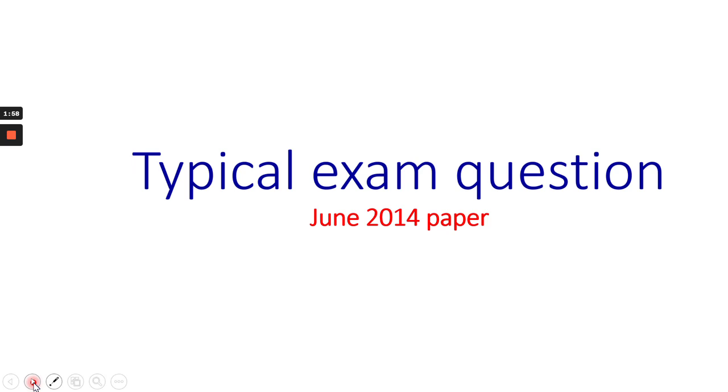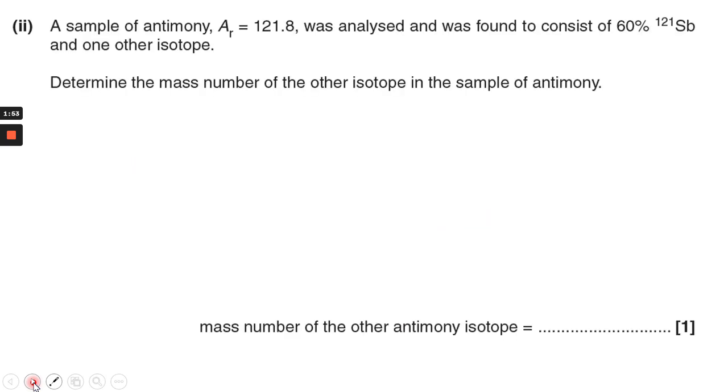So let's look at a typical exam question. This is from the June 2014 paper that asks you to do this type of calculation. So it gives you a sample of antimony, and it gives you its AR value. And it says it was found to consist of 60% of 121 antimony. Now it says determine the mass number of the other isotope. So the other isotope suggests there's only two isotopes in total.